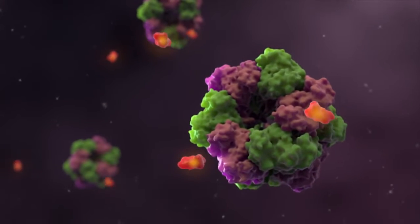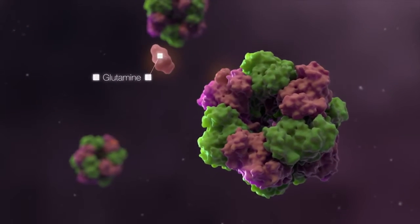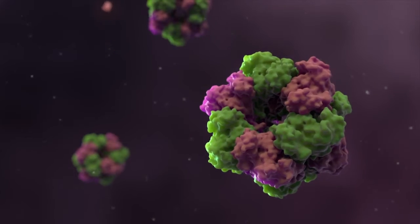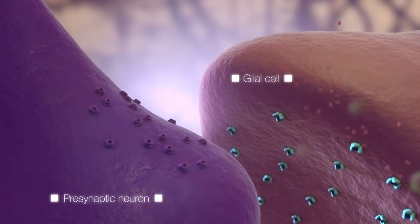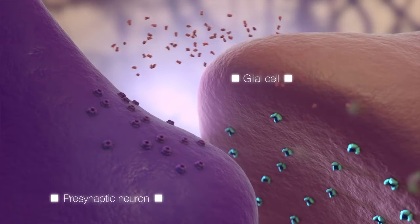Once glutamate is inside the glial cell, it is converted to glutamine, which no longer possesses excitatory properties. Glutamine is then shuttled back into the presynaptic neuron to be recycled into glutamate.